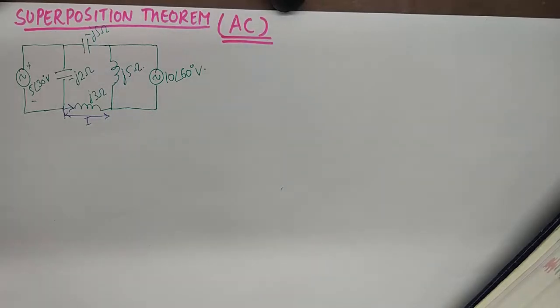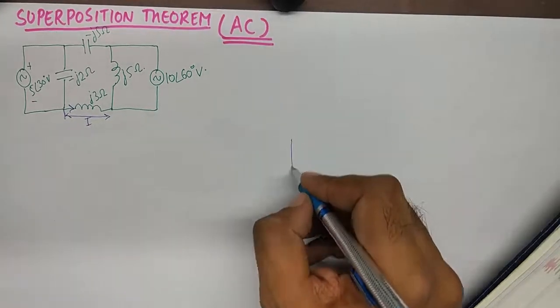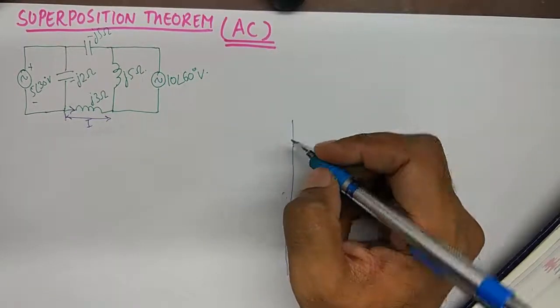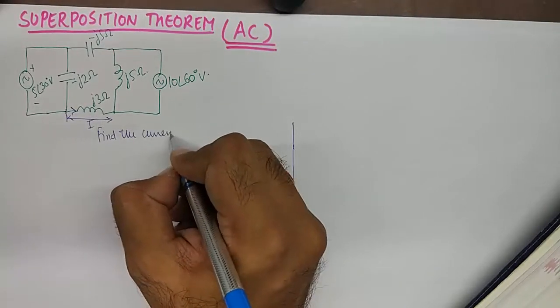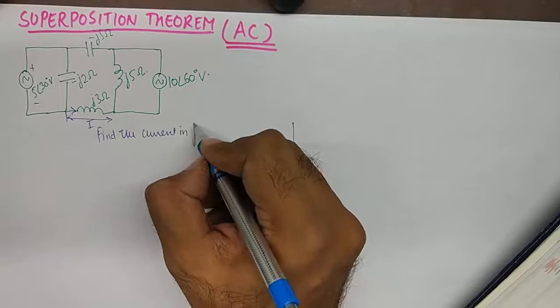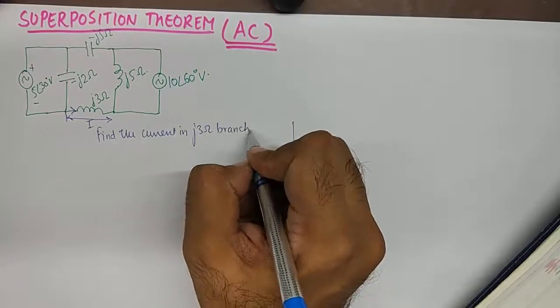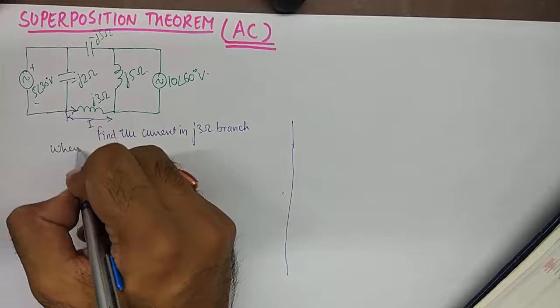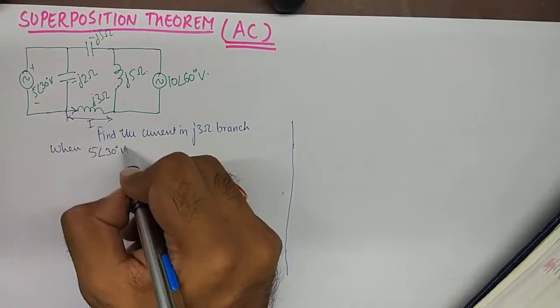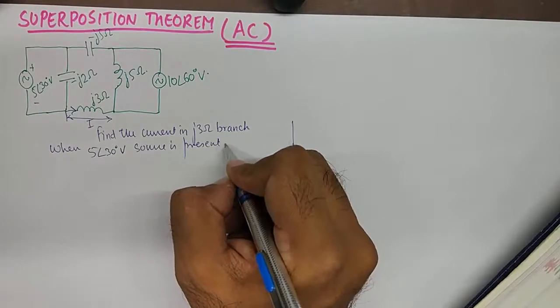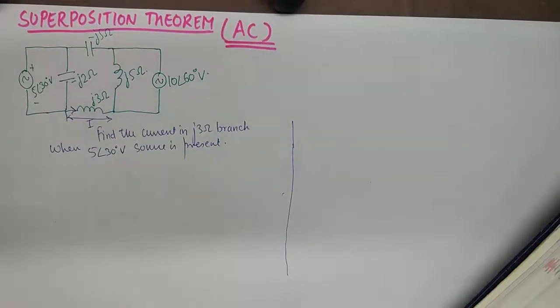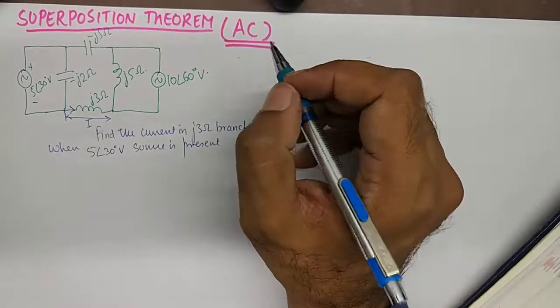The first thing that we will notice in this circuit is that it has two sources. So we'll need to perform two calculations. We'll need to find the current in J3 Ohm branch when 5 angle 30 volt source is present. So by the definition of Superposition Theorem we'll keep one source at one point in time. We'll eliminate all the other sources. And the rules of elimination of all the other sources are pretty simple.